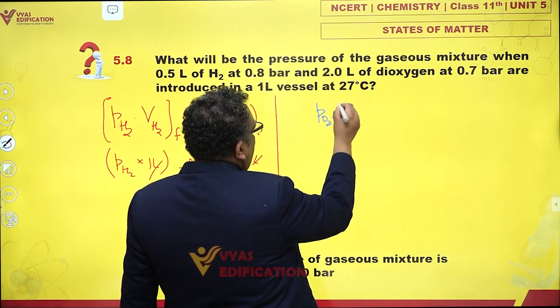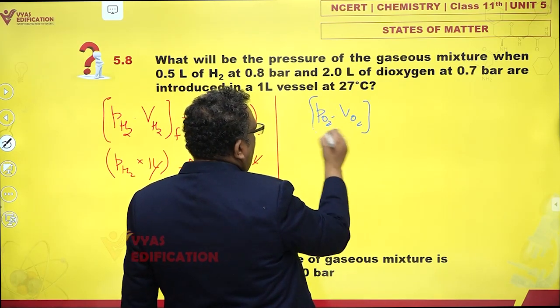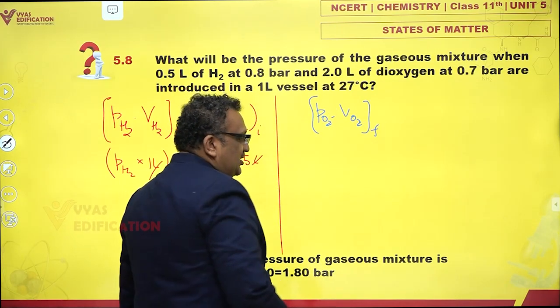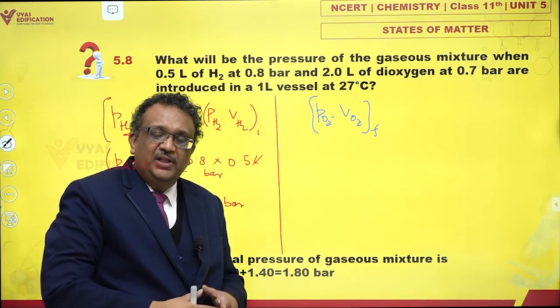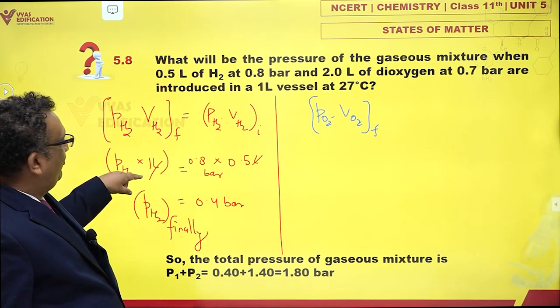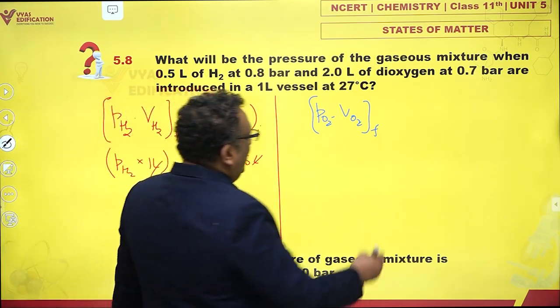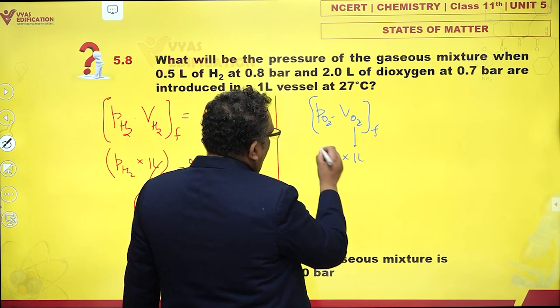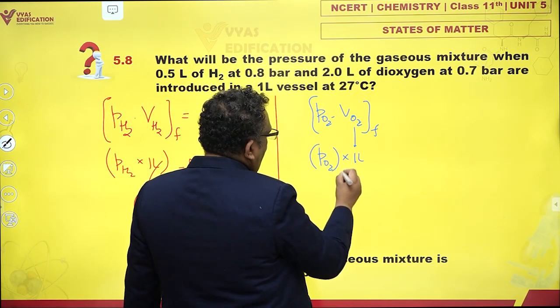Partial pressure of oxygen into volume of oxygen finally - please note there is nothing called as partial volume. Both the gases are occupying the complete vessel, so if the volume of vessel is 1 liter, 1 liter is the volume of hydrogen and 1 liter will be the volume of oxygen.